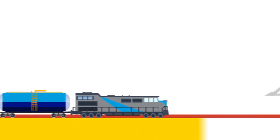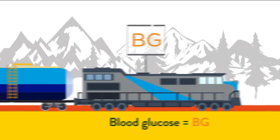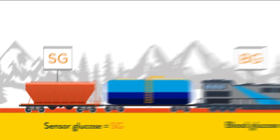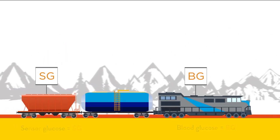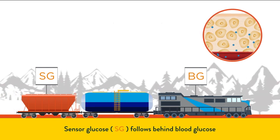Let's use a train to demonstrate the lag. Think of blood glucose as the engine on the train and the interstitial fluid glucose, or sensor glucose, as the back of the train. As carbohydrates are absorbed by the body, they enter the bloodstream first. Remember our capillary demonstration?